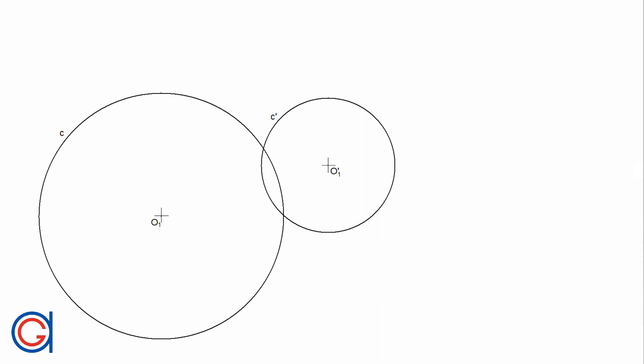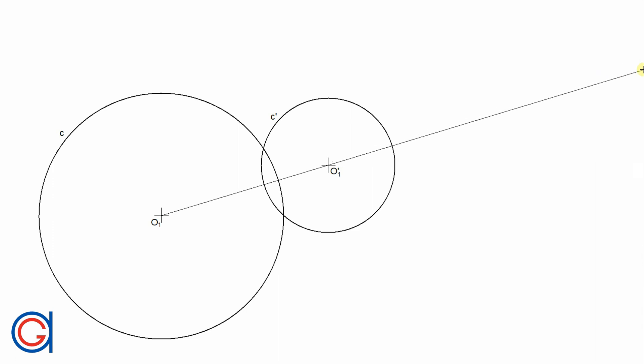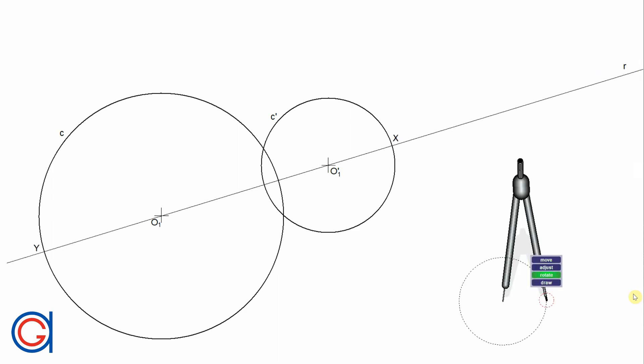We have to find the external tangent lines to obtain the center of the mid-circle. To do this, we start by drawing the line R which joins centers O1 and O'1. We get two new points which we will call X and Y at the external intersections of both circles C and C prime, as can be seen here on the screen.